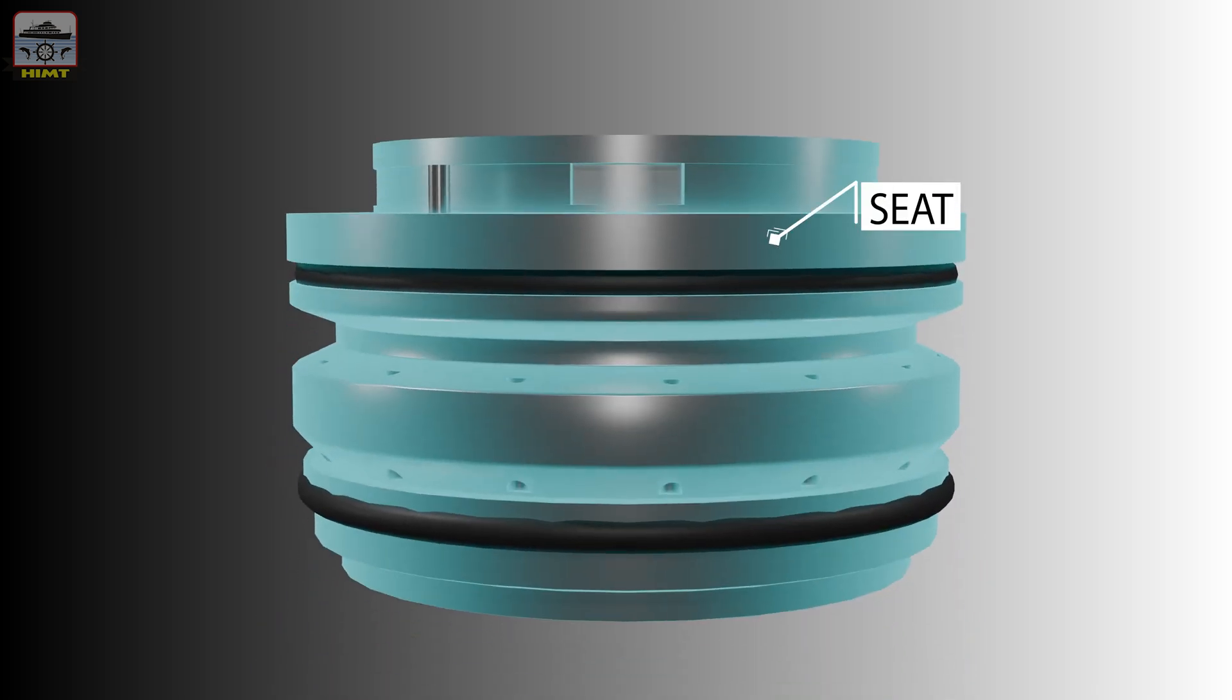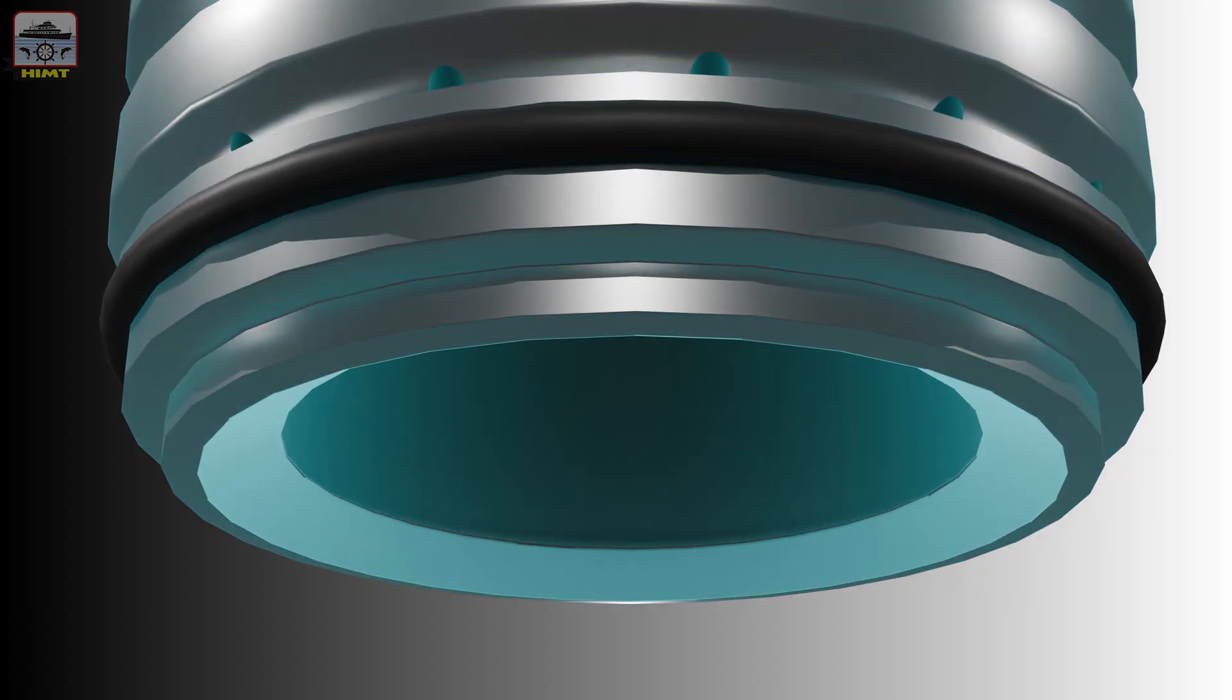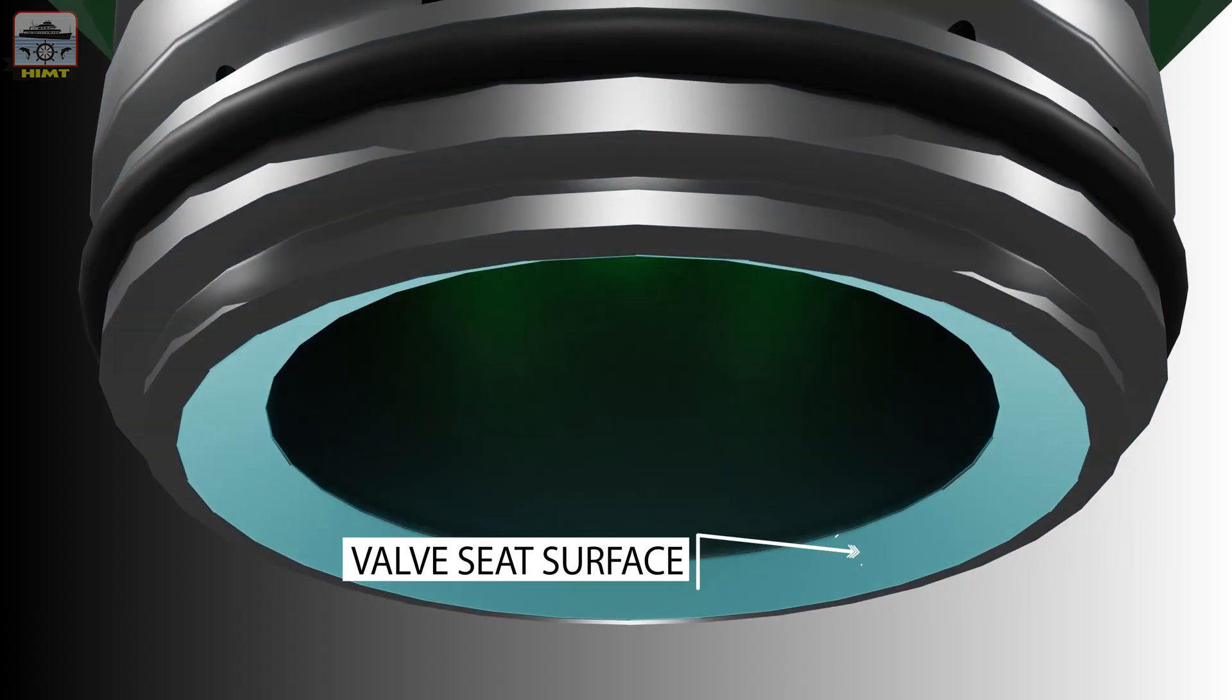The exhaust valve seat is a renewable valve seat which can be reconditioned or replaced in case of damage and is usually made from hardened molybdenum steel with stellite coating for good temperature resistant property. This is the valve seating surface against which the valve spindle rests during the portion of the engine operating cycle when the valve is closed.